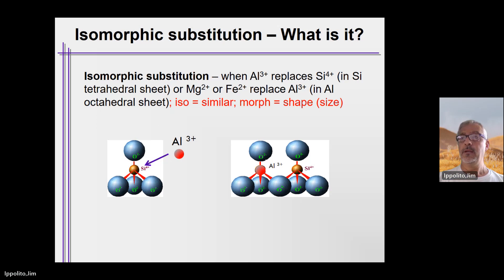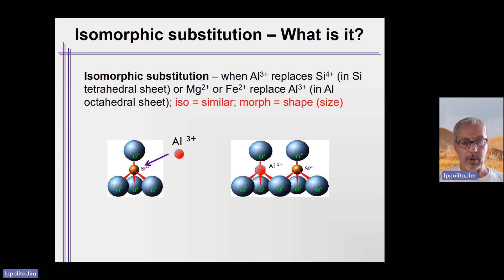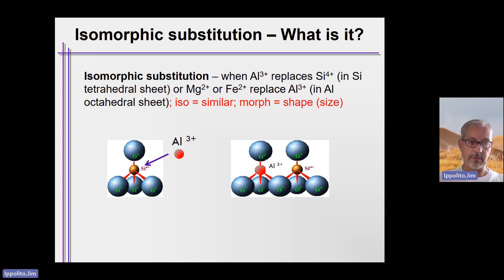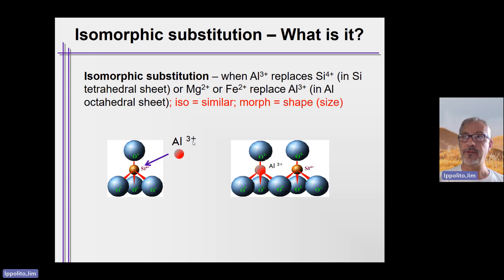The elements replacing what is in the center of either the tetrahedron or the octahedron are of similar shape or size — and this is important. If the replacing element is too small, the structure collapses in on itself; if it's too big, the structure explodes. Instead, you replace silicon with an element of similar size — in this case, aluminum Al³⁺. When Al³⁺ moves in, it replaces a plus-four cation, and you lose a positive charge.